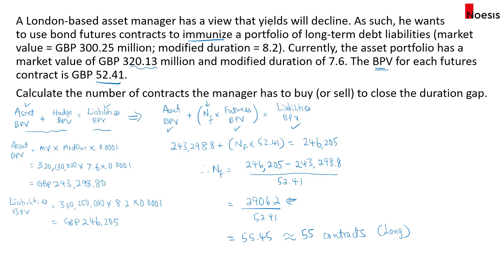Let's go back to the initial view. The manager's view is that yields will decline. When yields decline, the value of both assets and liabilities will increase, which affects the decision to immunize — essentially hedge — the portfolio. The asset BPV is approximately £243,000 and the liabilities BPV is approximately £246,000, assuming both are affected by the same yield.